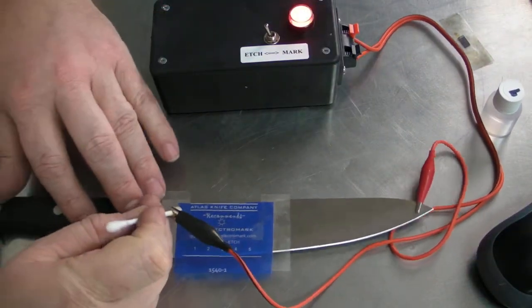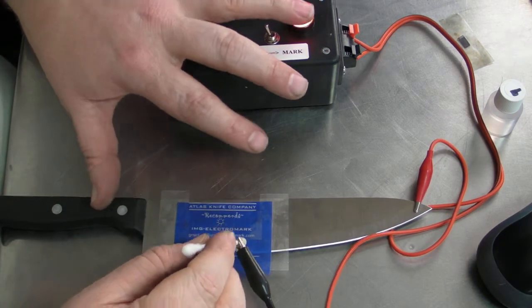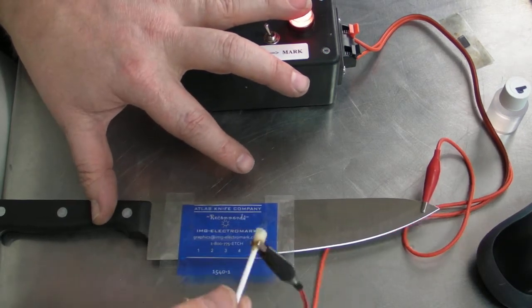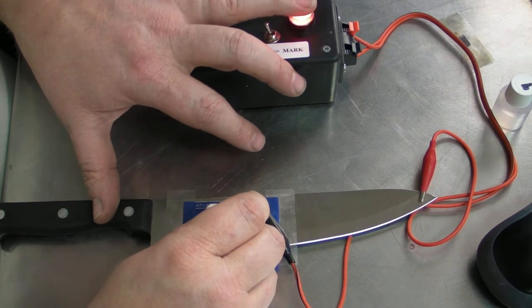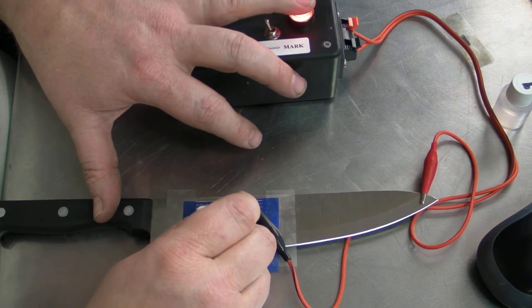And we will begin etching. We're just going to take the Q-tip, put it on there. Tap it a few times.